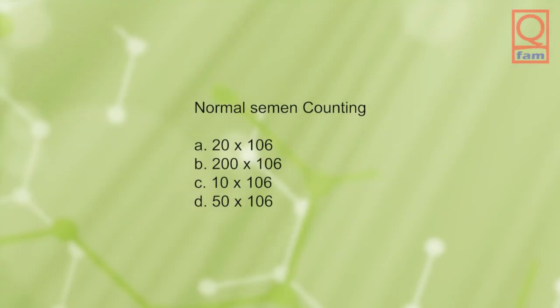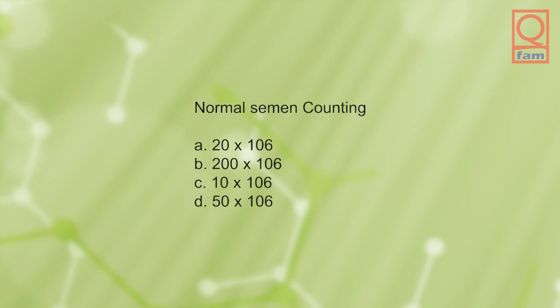Normal semen counting: A) 20×10⁶, B) 200×10⁶, C) 10×10⁶, D) 50×10⁶. The answer is B, 200×10⁶.